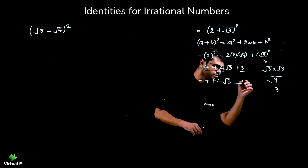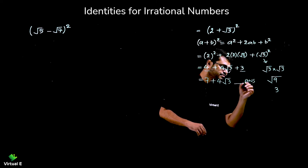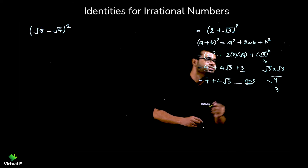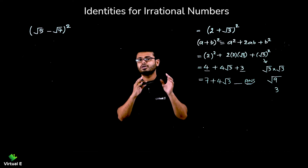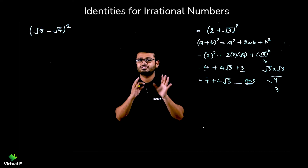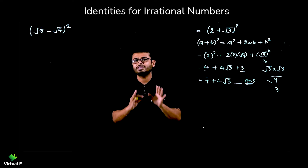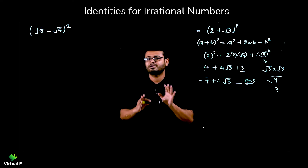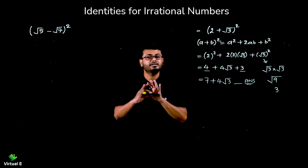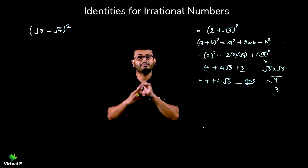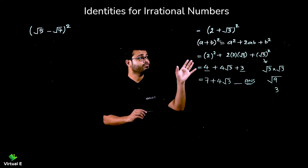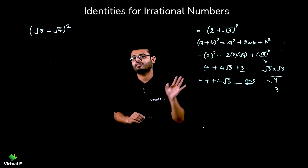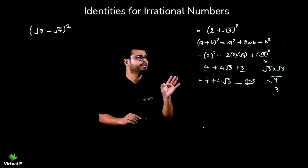So the answer is 7 + 4√3. Very simple. We just need to recall the identity we learned previously — nothing else, no need to remember new identities. This will work for any kind of expression.